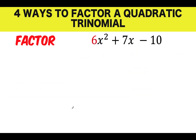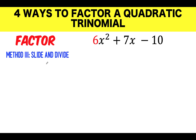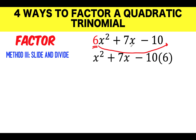Now let's go to the third method: slide and divide. What makes this problem difficult is that our A is 6. It's easier to factor when the coefficient of the x² term is 1. So we slide the 6 to the C part, making negative 10 become negative 10 times 6, giving negative 60. We don't change the middle term. We will then divide the resulting factors by 6 later.